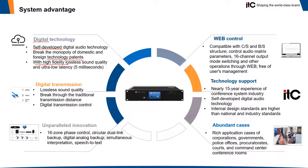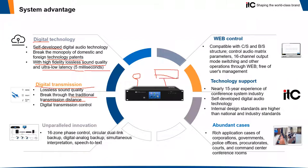With digital transmission and lossless sound quality, we can break through the traditional transmission distance limitation of 50 to 70 meters. By using our system, we can expand the system in many ways — like expanding power with a power box, or expanding delegators with an expanding controller. We have innovations about 16-zone phase control, circular dual-link backup, digital analog backup, simultaneous interpretation, speech-to-text, and numerous new functions. This system supports web control, compatible with CS or BS structure, so you can control the system by PC software or from the system web background.